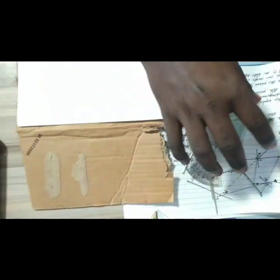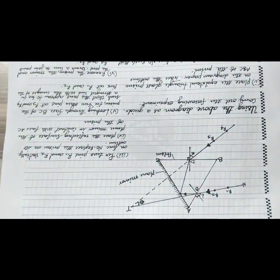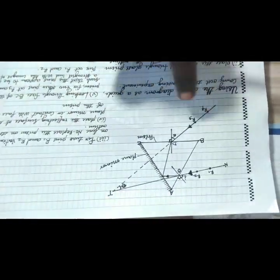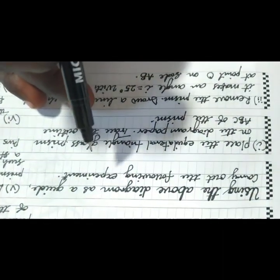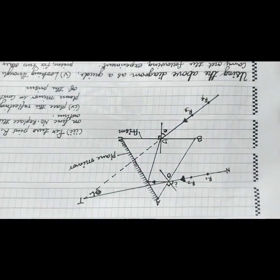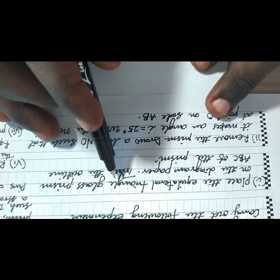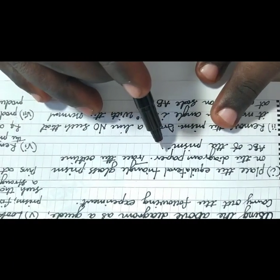To go about this experiment, read the instructions one at a time. Your diagram must always look like the guide provided. The question states: using the above diagram as a guide, carry out the following experiment. The first instruction is to place the equilateral triangular prism on the diagram paper and trace the outline ABC of the prism.